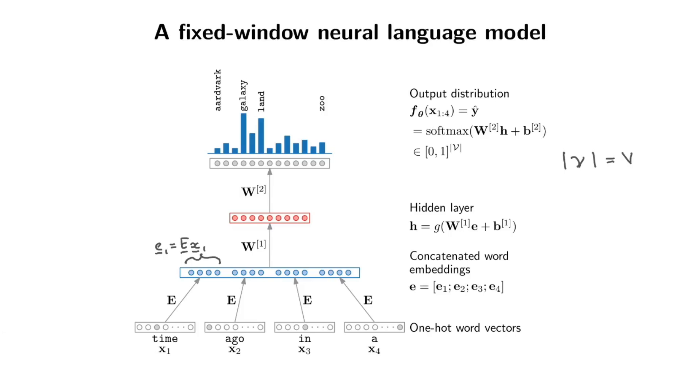So the problem with these neural language models is that you have this fixed length. A word that occurs before these words can't actually influence the prediction here because it doesn't have this long-term context. So the question is can we come up with a neural network that could process inputs of arbitrary length, that could actually process something that has a long history?